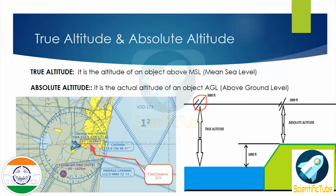Let's look at this diagram. Suppose this aircraft is flying at 3,000 feet — so the true altitude is 3,000 feet. But when it's flying above ground that is at 1,000 feet above mean sea level, the absolute altitude becomes 2,000 feet, which is 3,000 minus 1,000 feet. Hope that's clear.